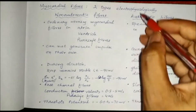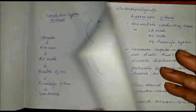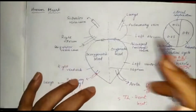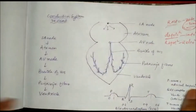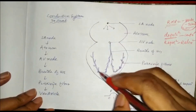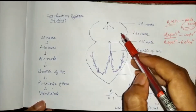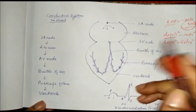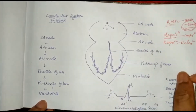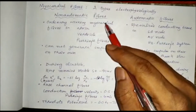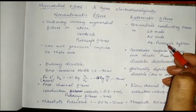Namaskar. Today we will study the electrophysiology of myocardial fibers — the cells of the heart. In the heart we have the right atrium, left atrium, right ventricle, left ventricle, and the pacemaker cells: SA node, AV node, bundle of His, and Purkinje fibers. There are two types of myocardial fibers: non-automatic fibers and automatic fibers. Automatic fibers are present in the SA node, AV node, and bundle of His.